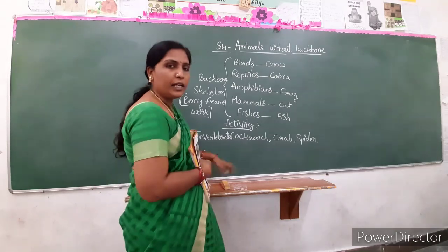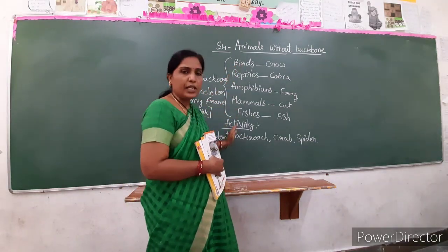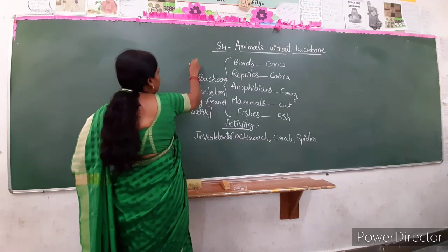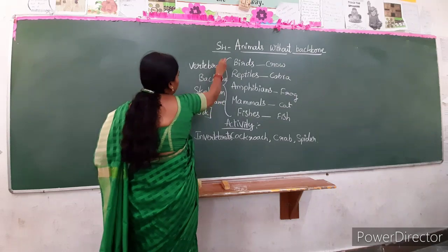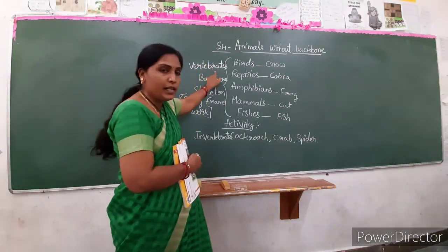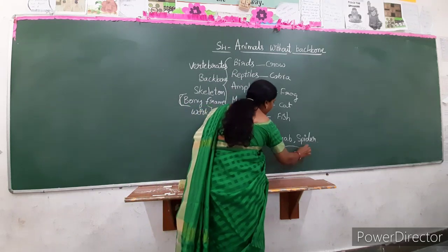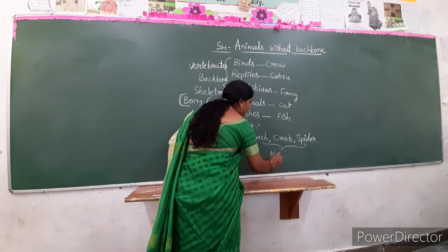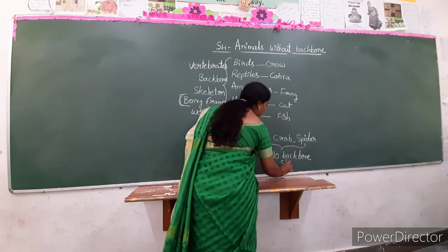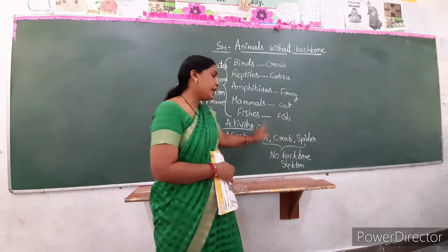The animals which are not having backbone, we are calling them as invertebrates. Then the animals which have backbone, do they have any scientific name? Yes. We will call these animals vertebrates. The animals which have backbone and skeleton are called vertebrates. The animals which do not have backbone - cockroach, crab, and spider - they are also not having skeleton.